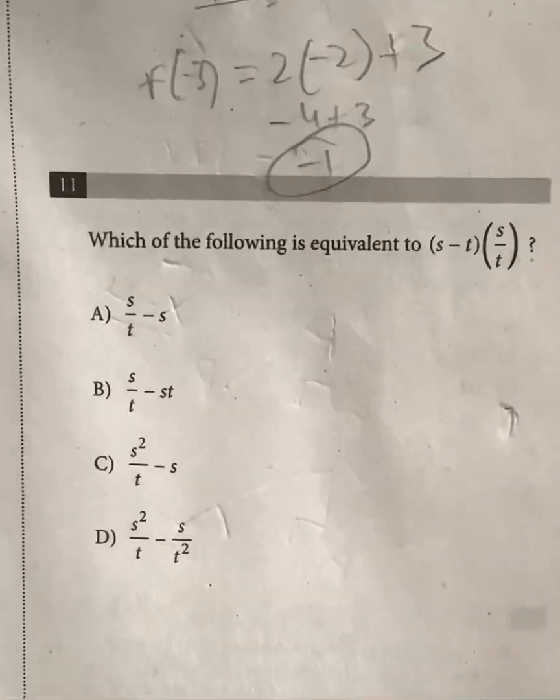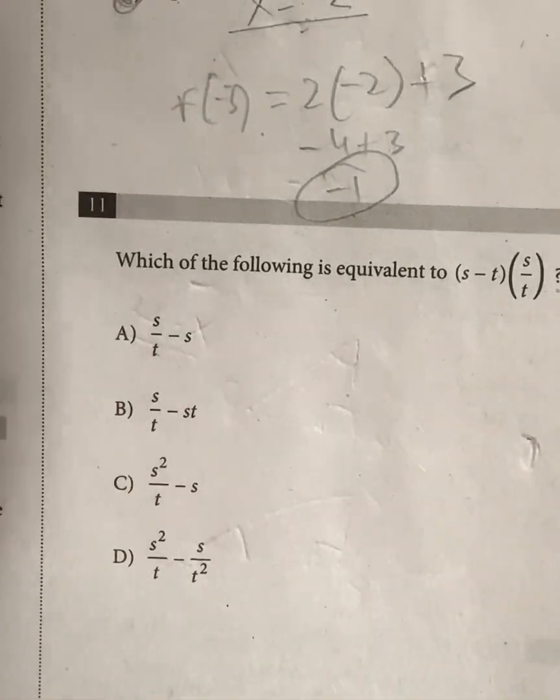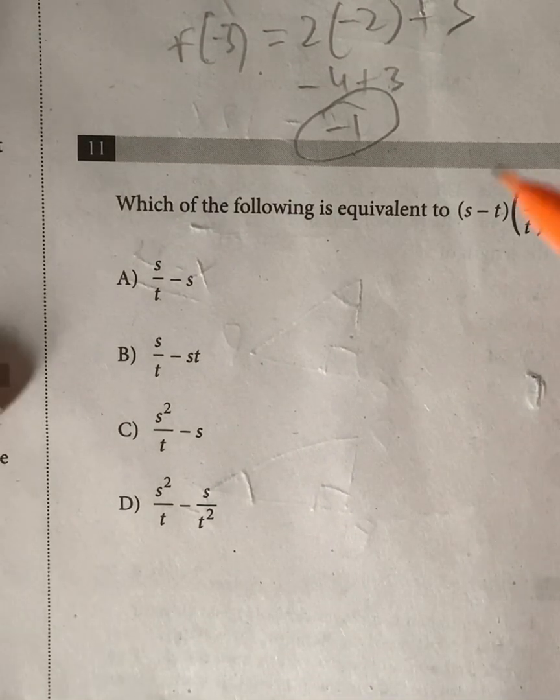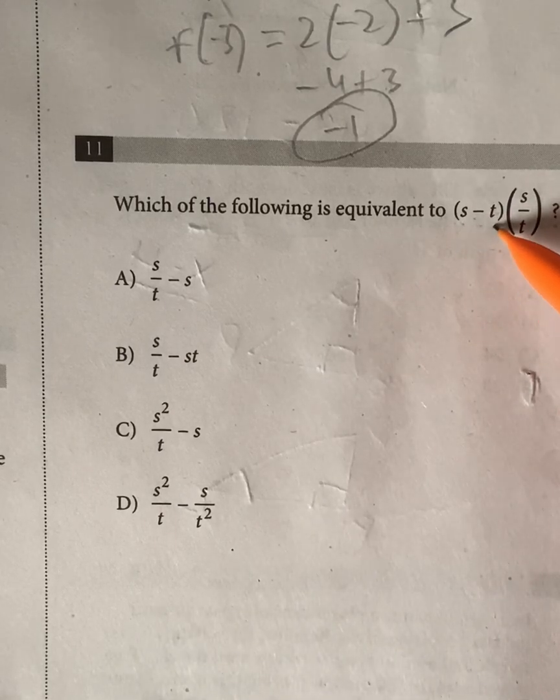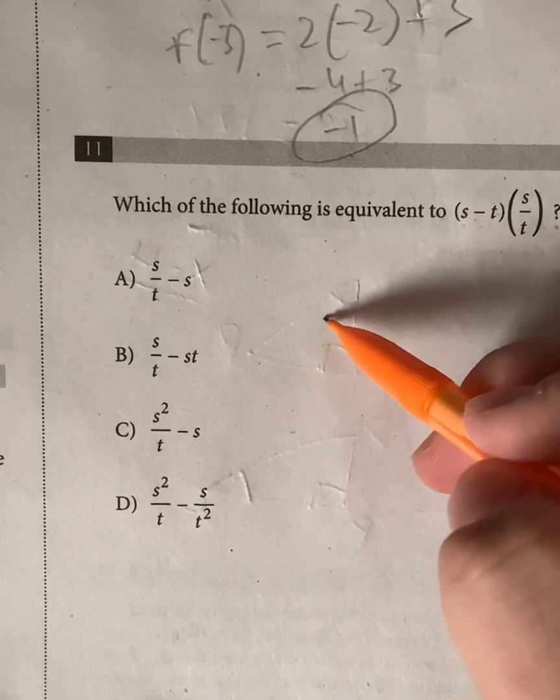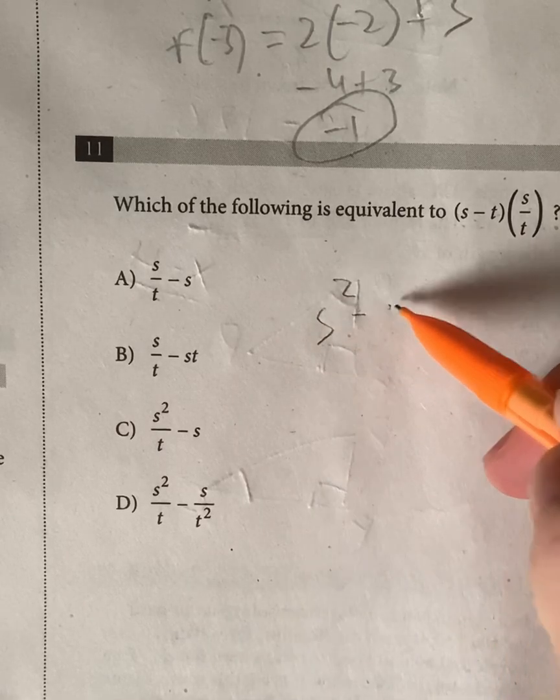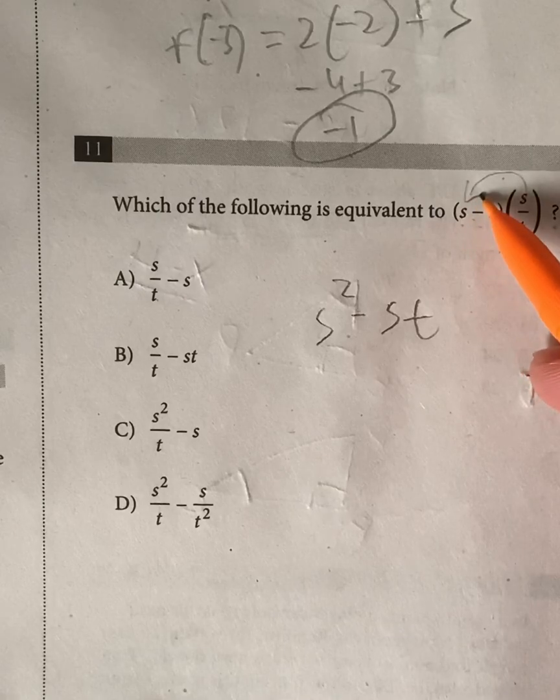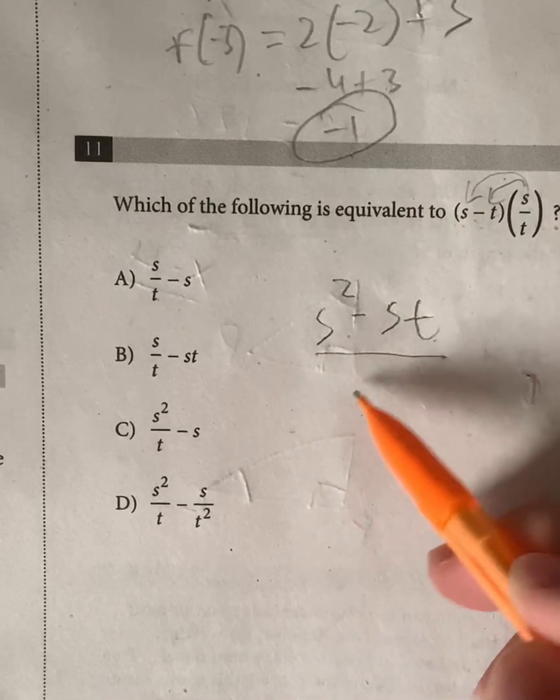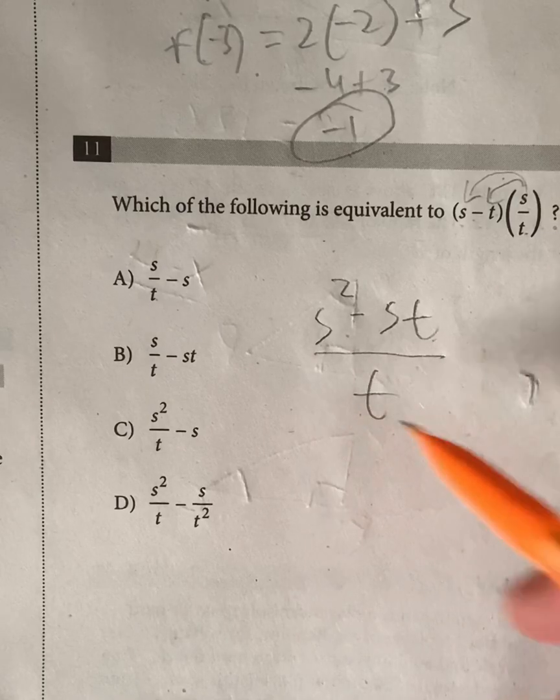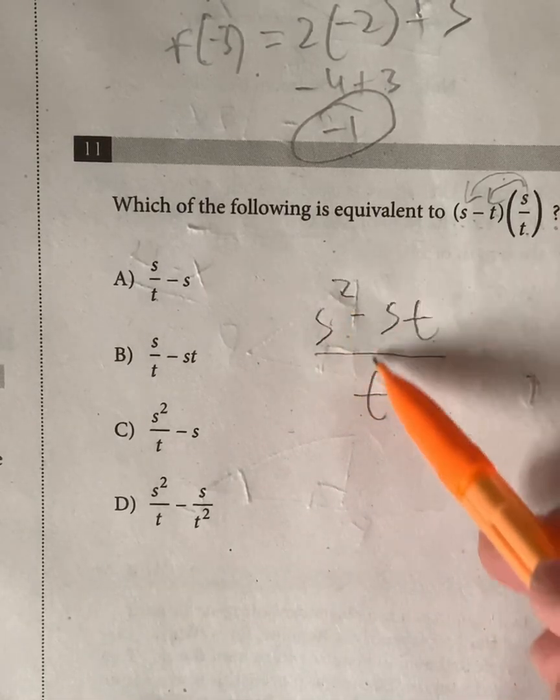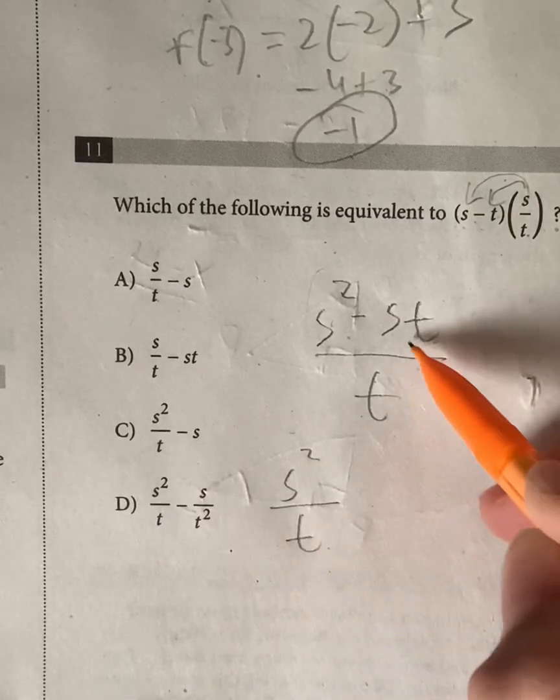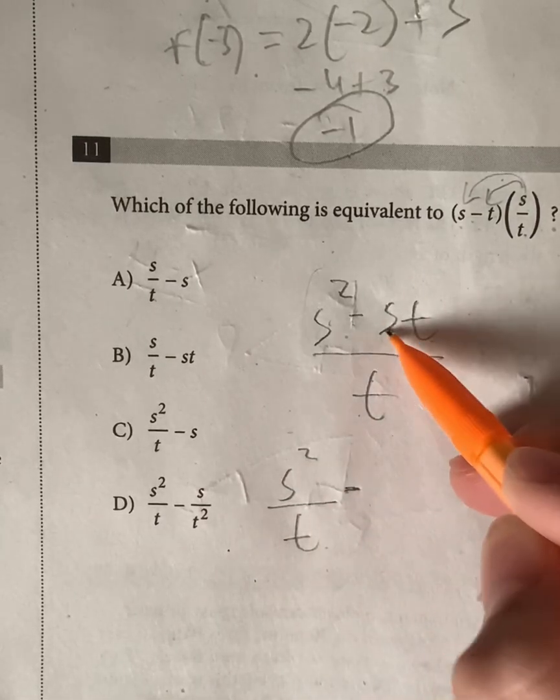Let's go to question 11. So which of the following is equivalent to s minus t times s over t? So let's just distribute. S minus t times s is just equal to s squared minus st. We're just multiplying s by s and s by negative t, giving us this. And this is all over that t right there.